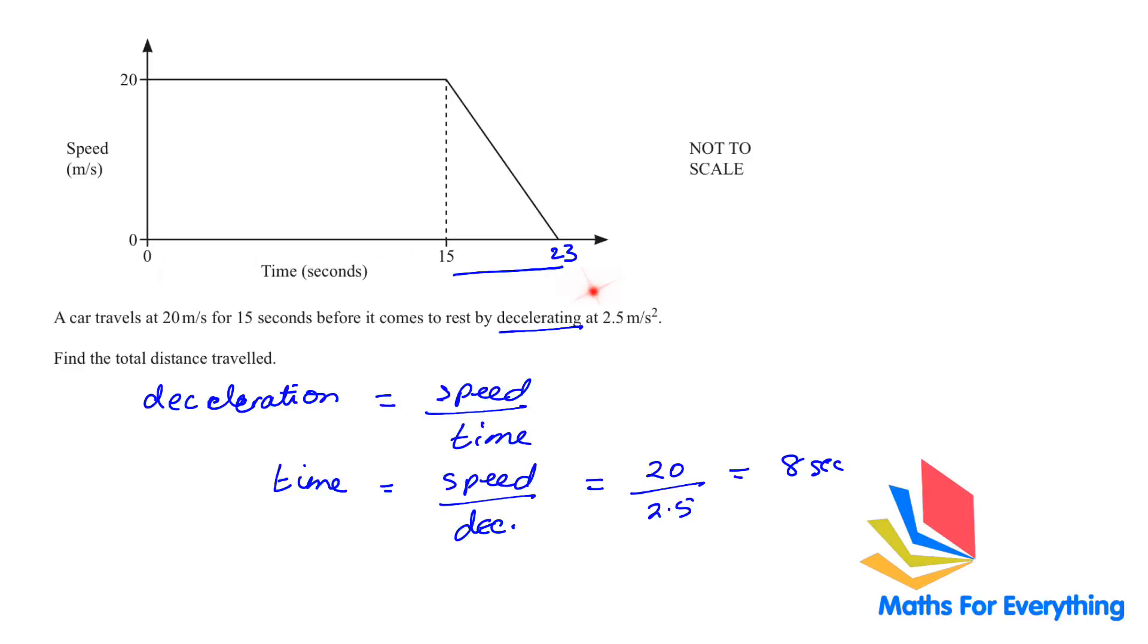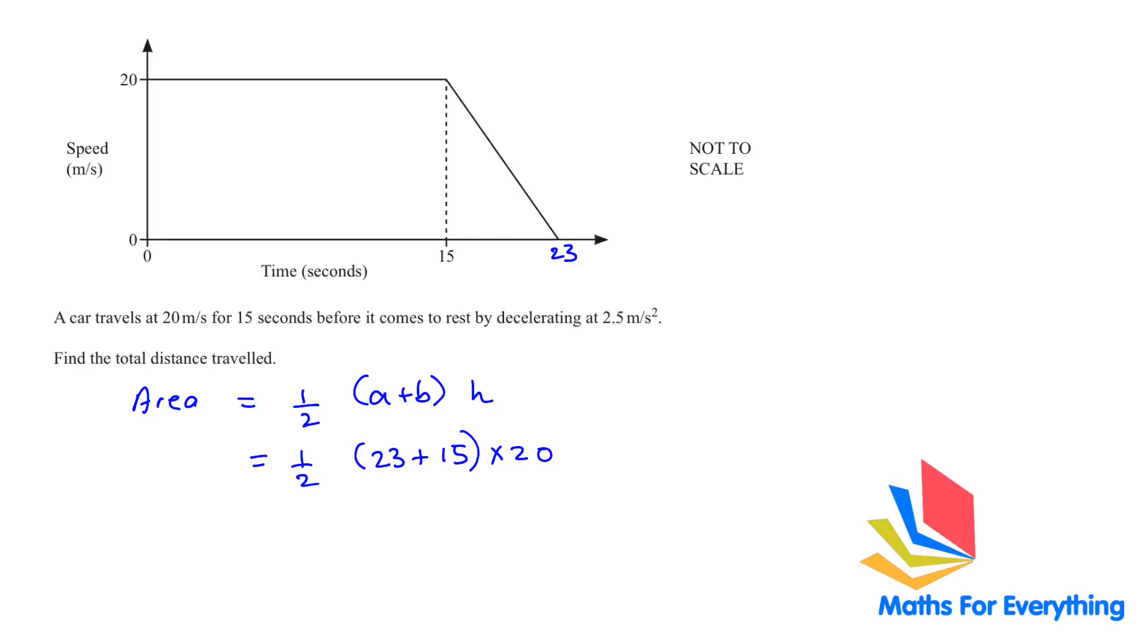Now that we know this value, we can find the area under the curve by using the trapezium rule. This is the trapezium rule. Half times A plus B times H. A and B are your parallel sides. And H is your height. So, let's replace the values. Half. A is 23. And B is 15. And height is 20. So we got 380. The total distance traveled is 380 meters.